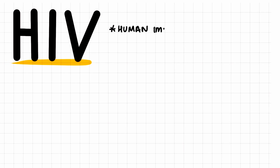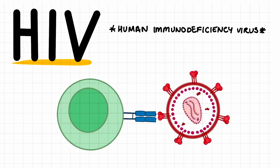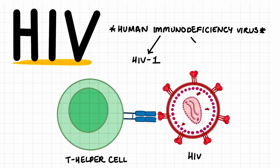HIV, otherwise known as the Human Immunodeficiency Virus, is known to be debilitating as it enters and damages CD4 T helper cells. There are two main types including HIV-1 and HIV-2, where HIV-1 is the most common type.